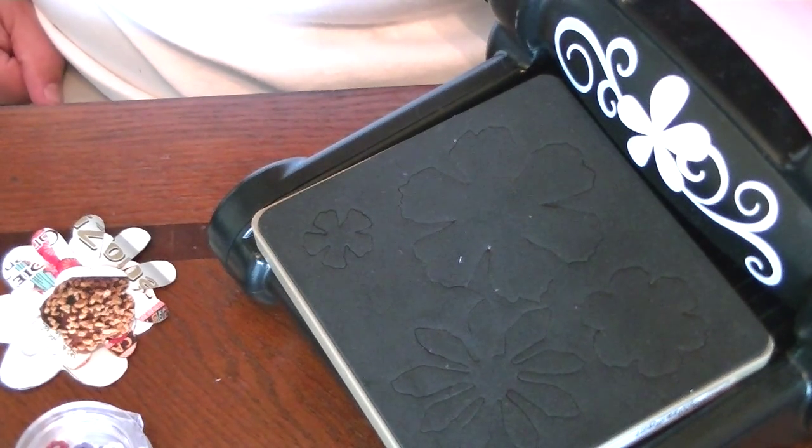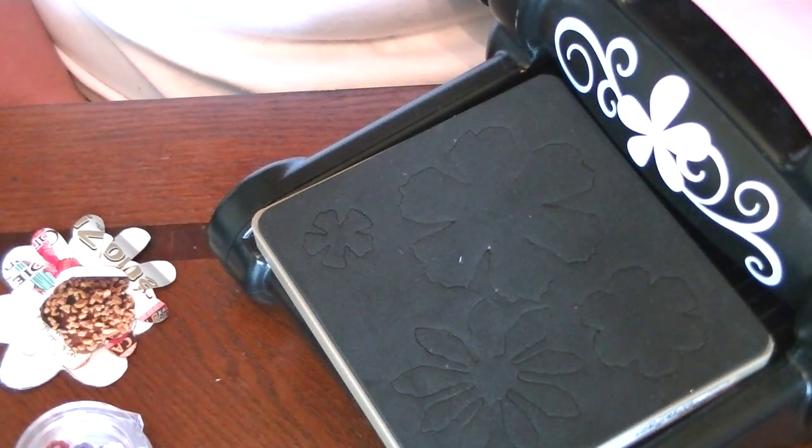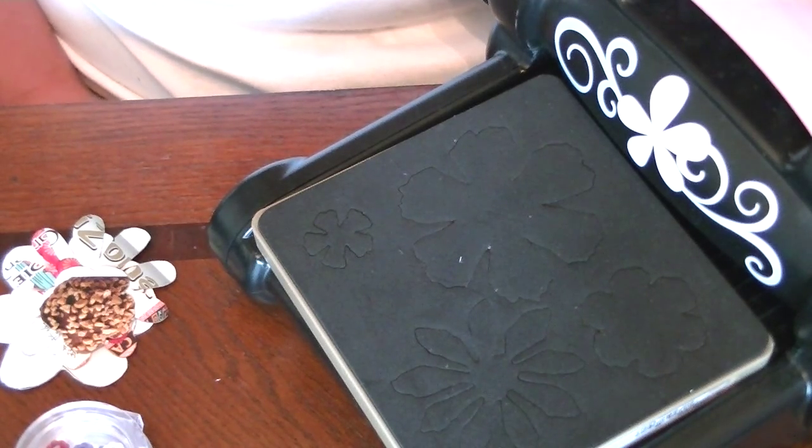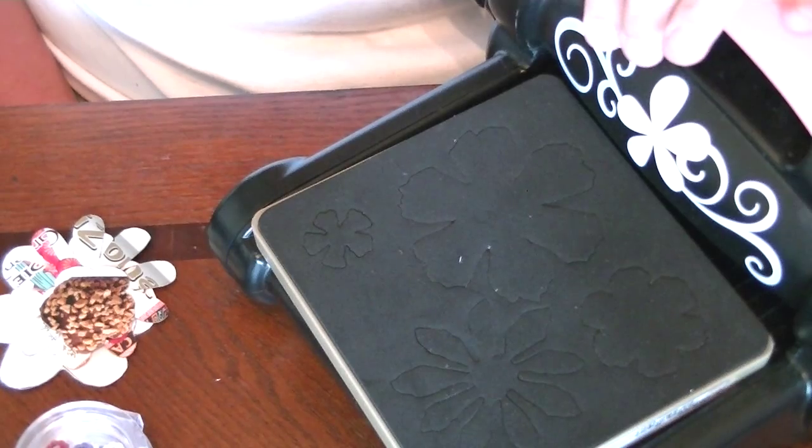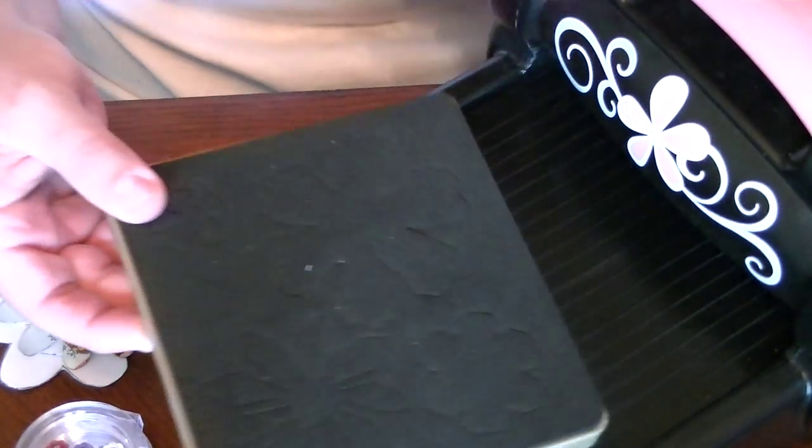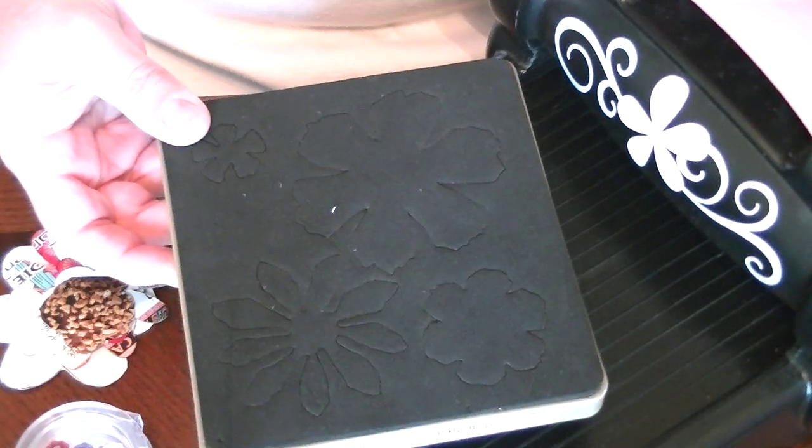So the first thing that you're going to need is your floral pieces that are cut from a soda can. To do that, I typically will use my Big Shot Sizzix. Here's one of the patterns that I can use. It's the Tim Holtz Tattered Floral.